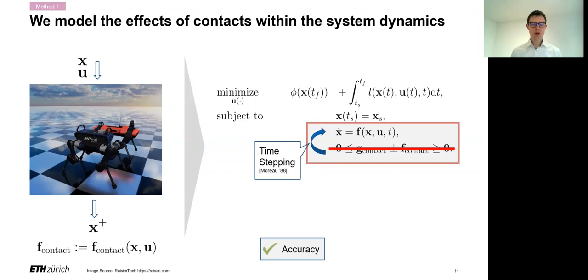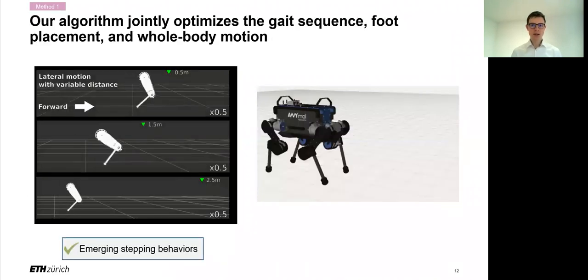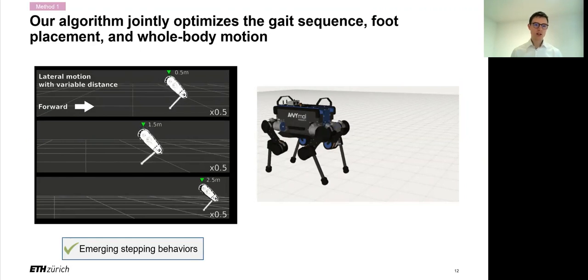So the solution that we found was inspired from physics simulators, which compute the interaction force as a function of the state and inputs of the system. And we transferred this idea to the optimal control problem, where rather than enforcing the constraints at the level of the optimization, we folded them into the dynamics. And this is possible through something called morose time stepping, which is an accurate way of representing the effects of contacts inside the system dynamics. Doing so is particularly promising or convenient if you combine it with a gradient-based shooting method, the details of which are not entirely important at this point. But it guarantees us that we generate feasible motion plans with respect to this constraint and have a computational complexity that is linear in the time horizon.